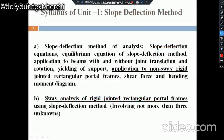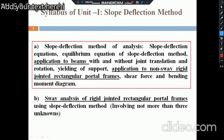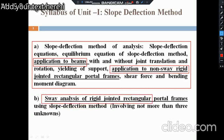Now let's see the syllabus for Unit Number One. This unit is divided into two chapters. The first chapter covers the basic concepts and fundamentals of the slope deflection method — the slope deflection equations, their derivation, and equilibrium equations — applied to beams and non-sway rigid jointed frames. The second chapter deals with sway analysis of rigid jointed rectangular portal frames.